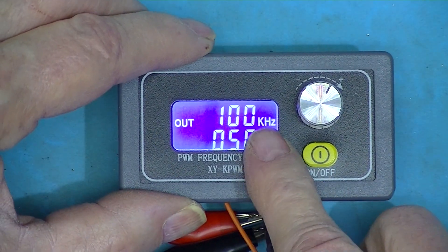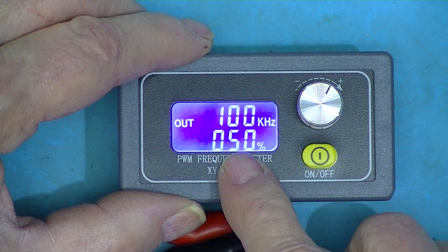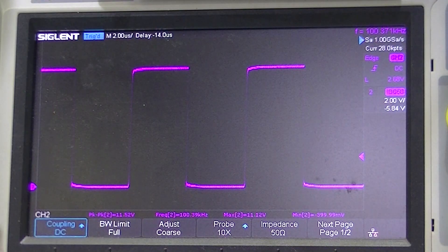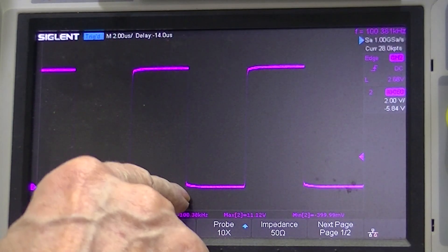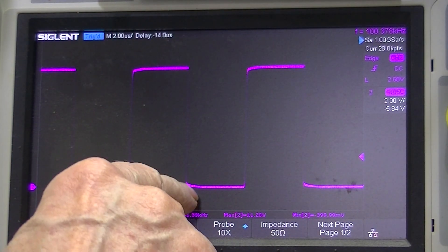So here you can see on the little unit, it's 100 kilohertz, 50% duty cycle. And if we look at the oscilloscope, we're seeing just the same thing. Now there appears to be a little bit of ringing right here.